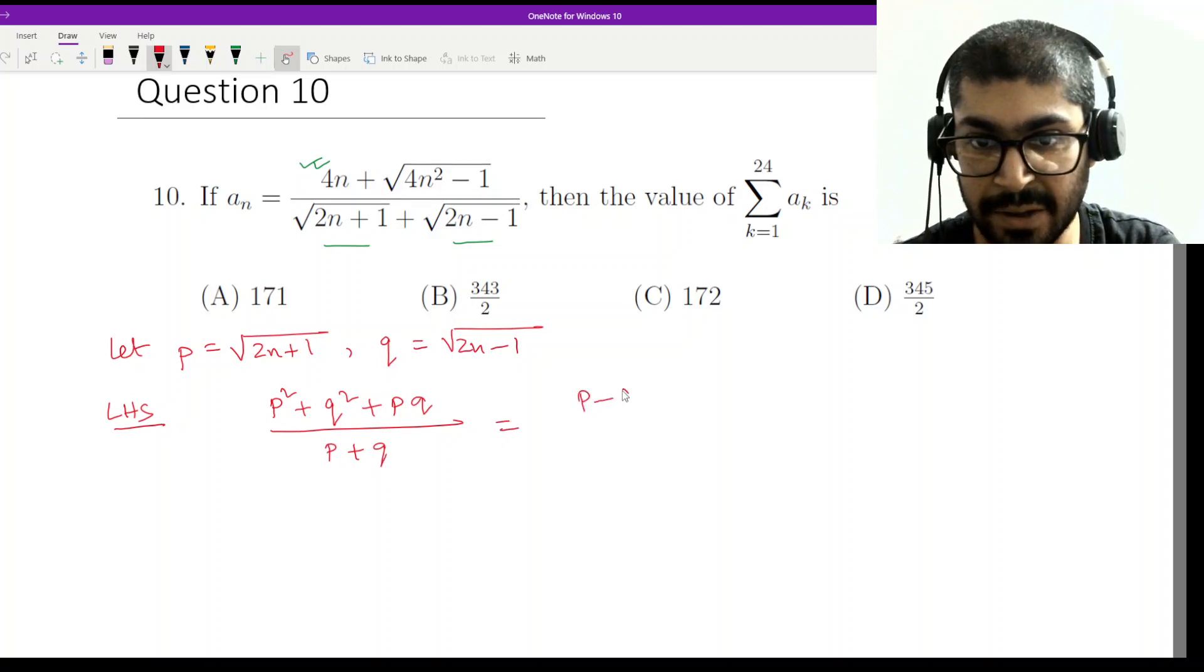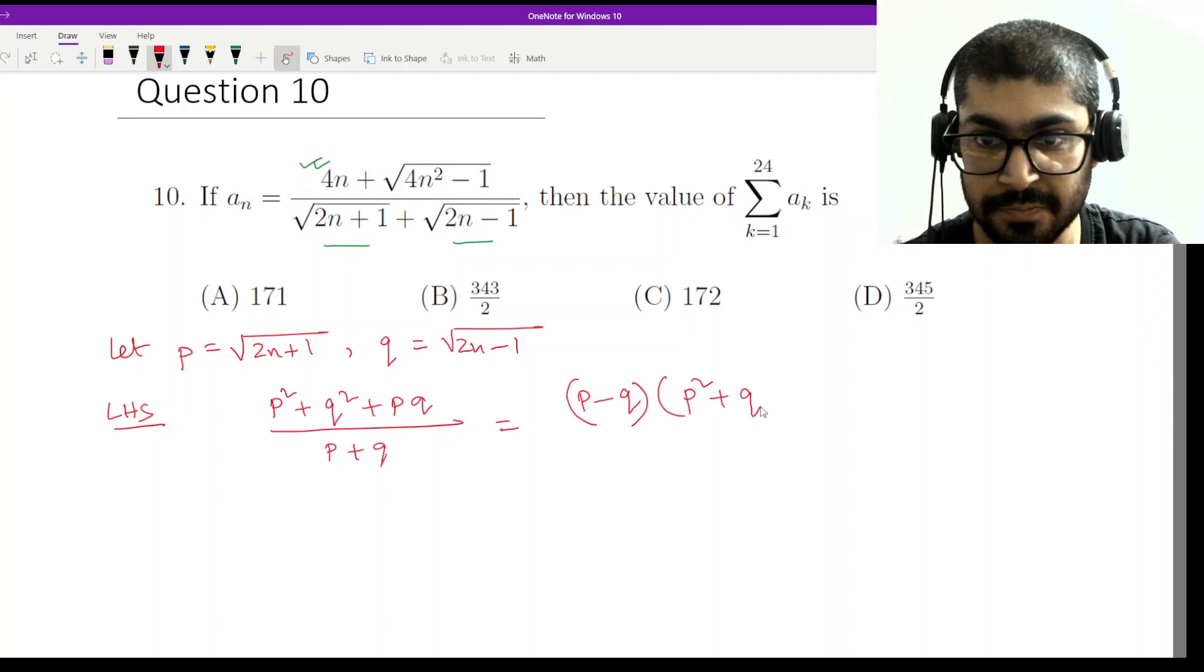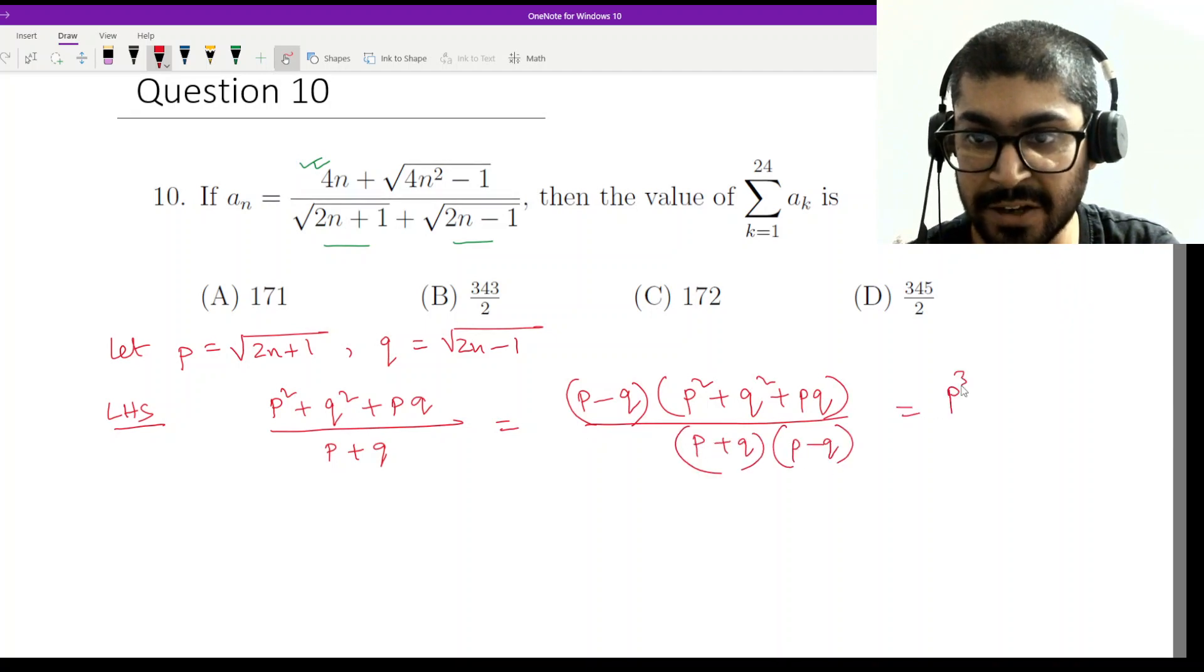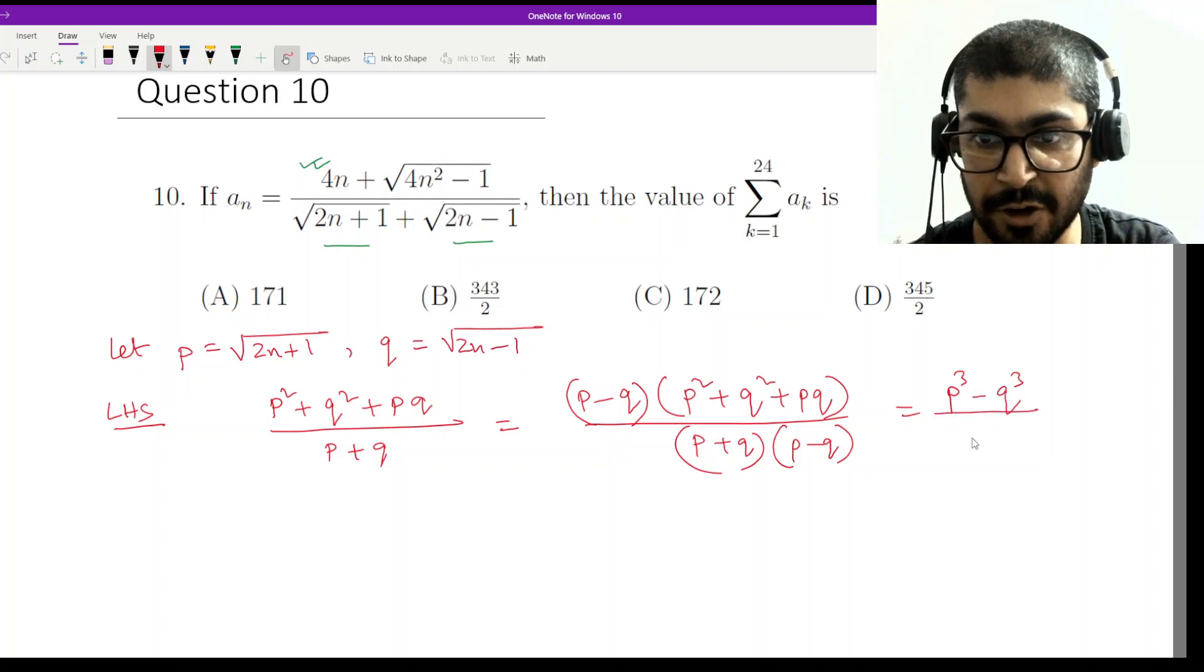We have LHS will be p square plus q square plus pq by p plus q. This is what we have. So what do we do? We multiply by p minus q. Now if we multiply by p minus q, what happens to the numerator?